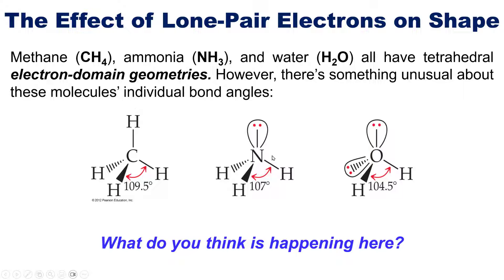So the lone pair in ammonia increases the bond angle between that lone pair and all of the hydrogens, which decreases the bond between each of the hydrogens themselves, and by analogy, similar thing happens in the H2O.